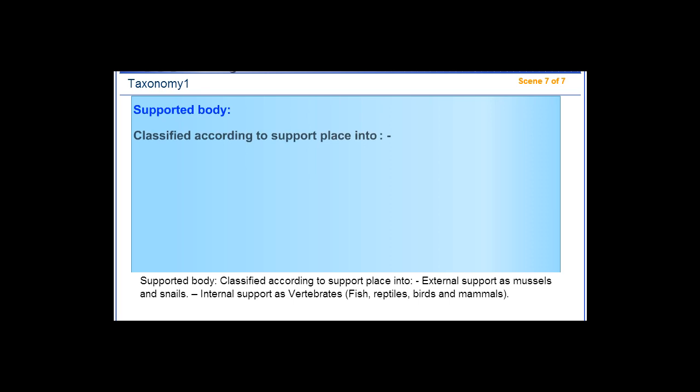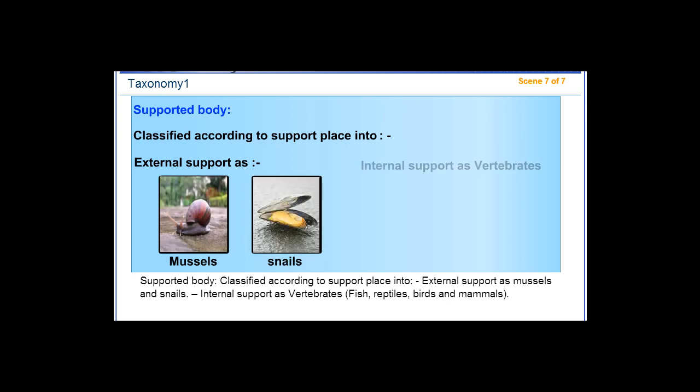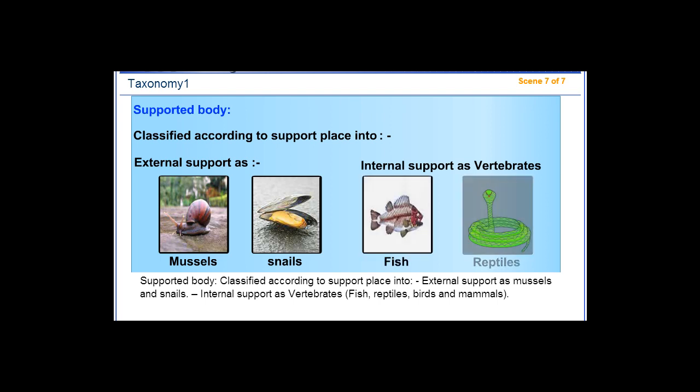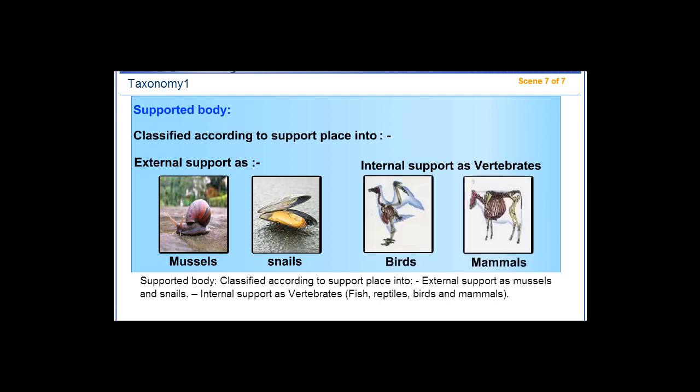Supported body animals are classified according to support location into external support, such as mussels and snails, and internal support, such as vertebrates including fish, reptiles, birds, and mammals.